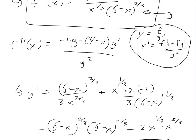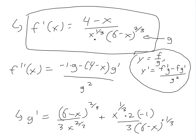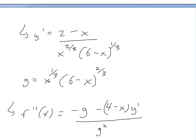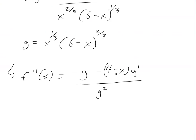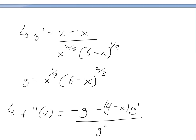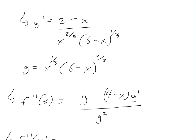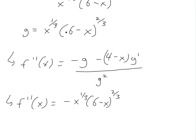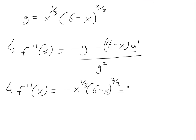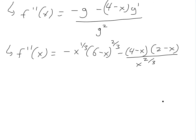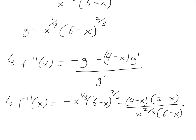So we scroll back up and see where we put it, and we have to put g prime in here. So we're going to have negative g — which is x^(1/3) times (6 minus x)^(2/3) — minus (4 minus x) times g prime. All divided by g squared. Our second derivative is therefore f double prime of x equals negative g minus (4 minus x) times g prime all divided by g squared. Now we can just plug in what we know: g prime is (2 minus x) divided by x^(2/3) times (6 minus x)^(1/3).